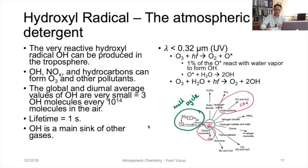OH is produced when ozone is hit by photons from sunlight at a very specific wavelength of less than 0.32 micrometers — basically UV light. This reaction produces energetically excited oxygen atoms, or O*. Only one percent of this O* reacts with water vapor to form OH, through the equation: O* + H₂O → 2 OH.